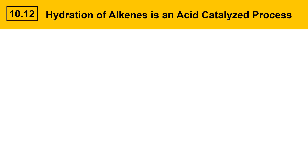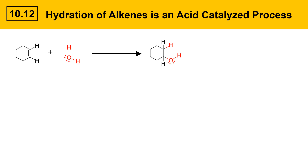Hydration of alkenes is an acid-catalyzed process. Here's the overall balanced equation that shows a representative alkene reacting with water — water adds across the carbon-carbon double bond to give an alcohol. The newly added atoms are shown in red.